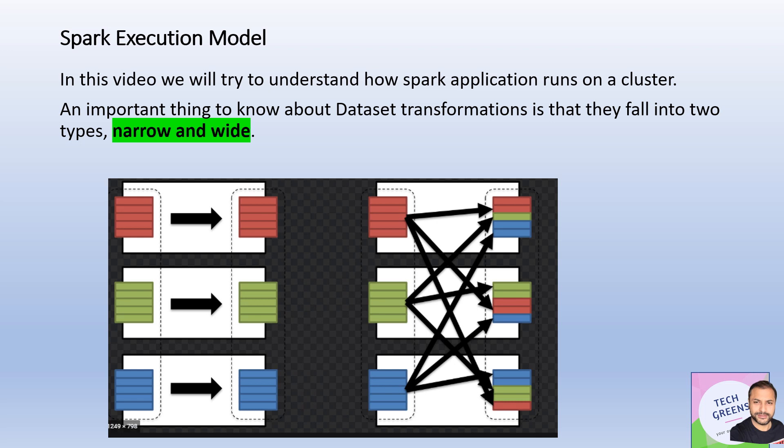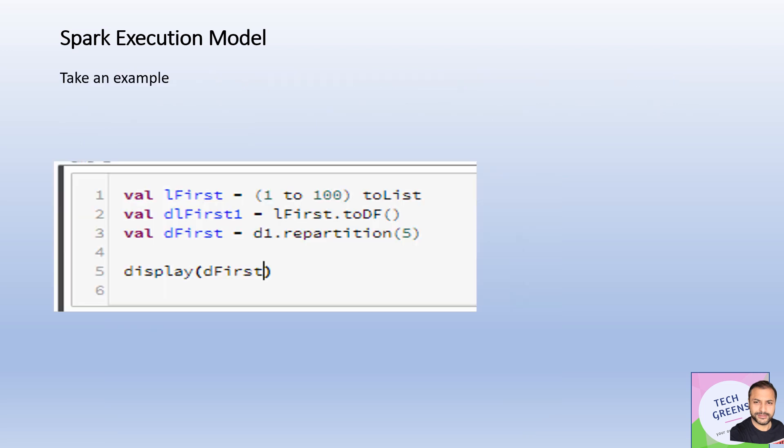Any data transformation in the Spark world falls into two categories: narrow and wide. I've discussed these in detail in a separate video, but quickly at a high level — narrow transformations do not require any shuffling of data. The same partitions are worked upon and result in the same partition. Wide transformations involve data being shuffled across different partitions on different nodes. Quick examples: narrow transformations include select, filter, and map operations; wide transformations include groupByKey, repartition, and joins.